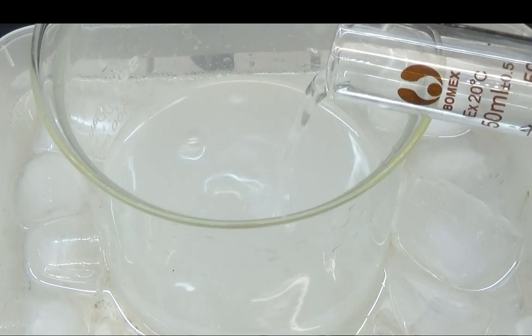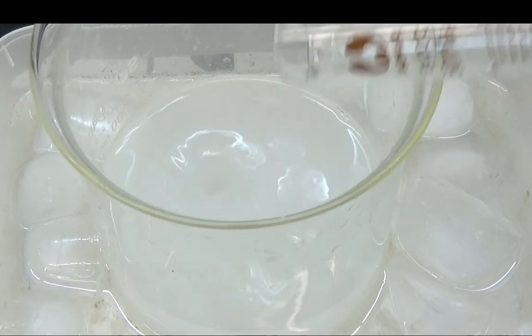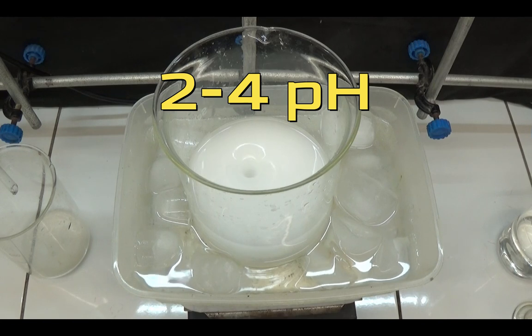In total, 35ml of diluted hydrochloric acid has been added, resulting in a pH between 2 and 4.